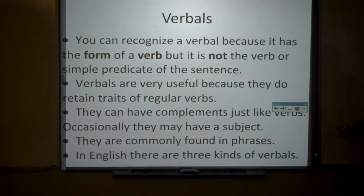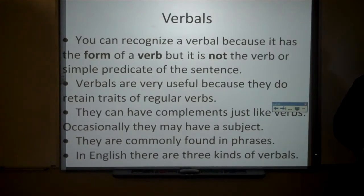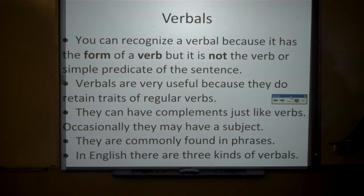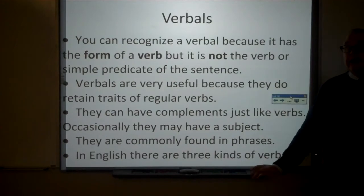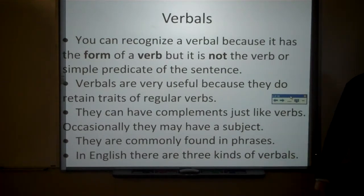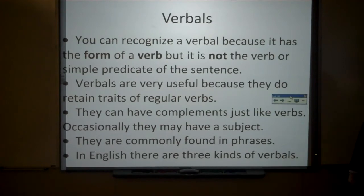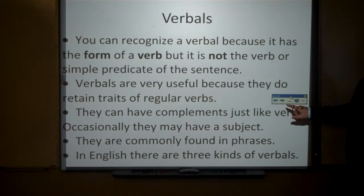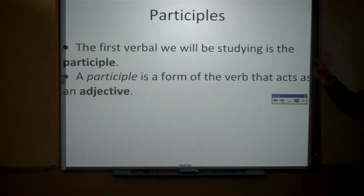You can recognize a verbal because it has the form of the verb, but it is not the verb or simple predicate of the sentence. Verbals can be very useful because they do retain certain traits of regular verbs. They can have complements, just like verbs. Occasionally they may have a subject. They are commonly found in phrases. In English, there are three kinds of verbals, and today we are going to look at one kind — the participle.